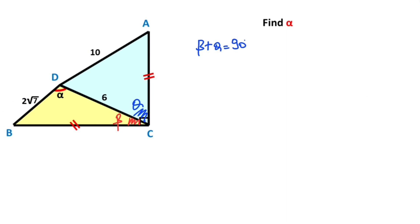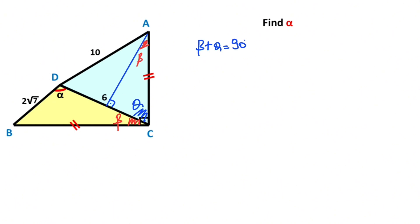I want to create two triangles. Notice that these two lengths are equal, so if we draw a perpendicular line like this, notice that this angle must be equal to beta. So if we extend corner D like this, and let's draw one more perpendicular line like this.